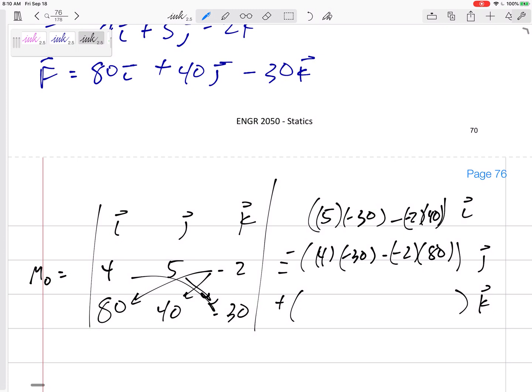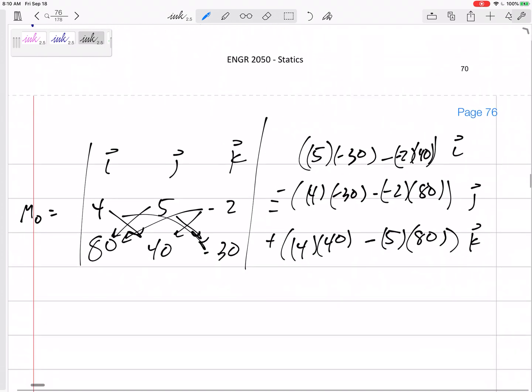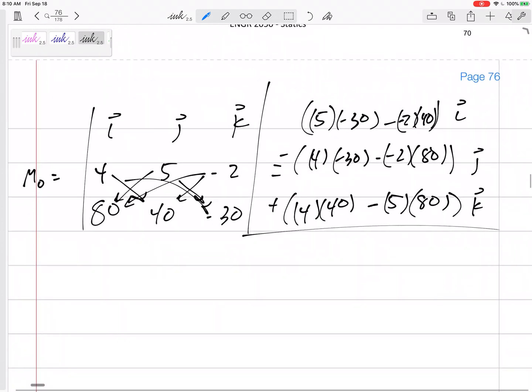And then my k component would be 4 times 40 minus 5 times 80. I'll be real careful with the math, and I would get negative 70 is the i component, negative 40 is the j component, negative 240 is the k component.